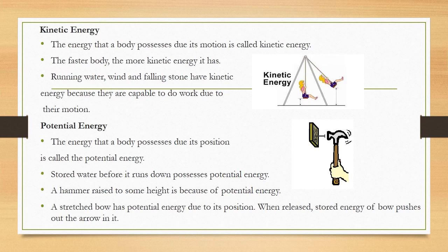In the diagram on this slide, examples of kinetic energy include a girl sitting on a moving swing and a moving hammer — both have kinetic energy. Potential energy is the energy that a body possesses due to its position. Examples: stored water before it runs down possesses potential energy; a hammer raised to some height has potential energy; and a stretched bow has potential energy due to its position. When released, the stored energy of the bow pushes the arrow out.